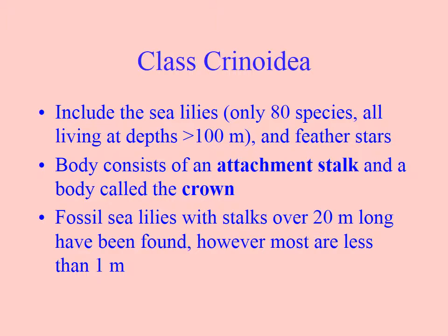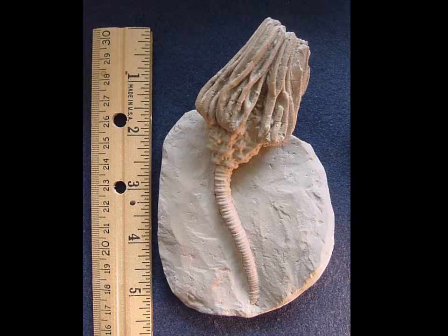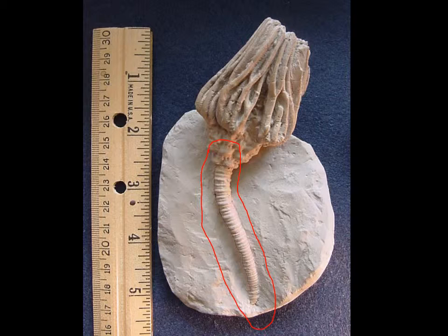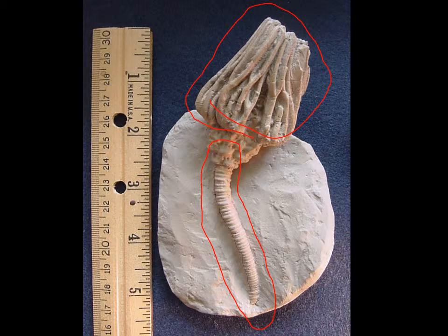The fossil ones had stalks over 20 meters long — that's a big, long stalk, a big animal. Here's a nice fossil of a sea lily, and you can see the arms are all bunched up.